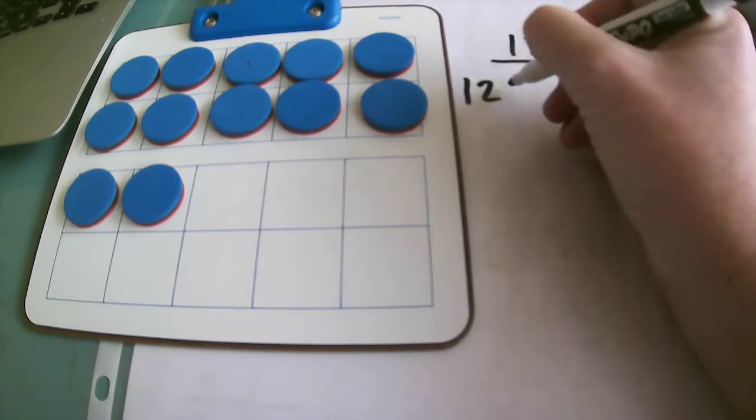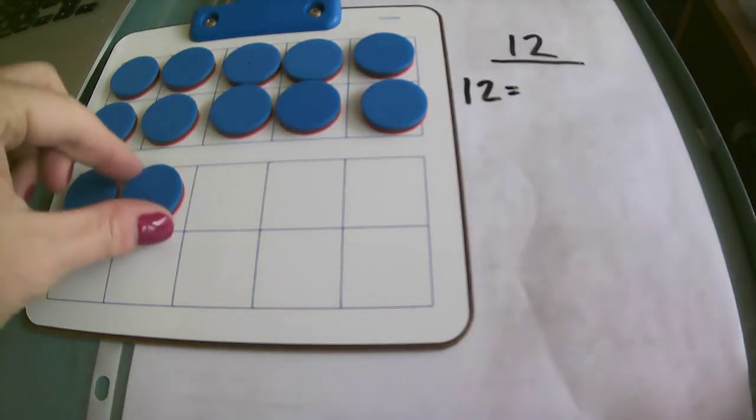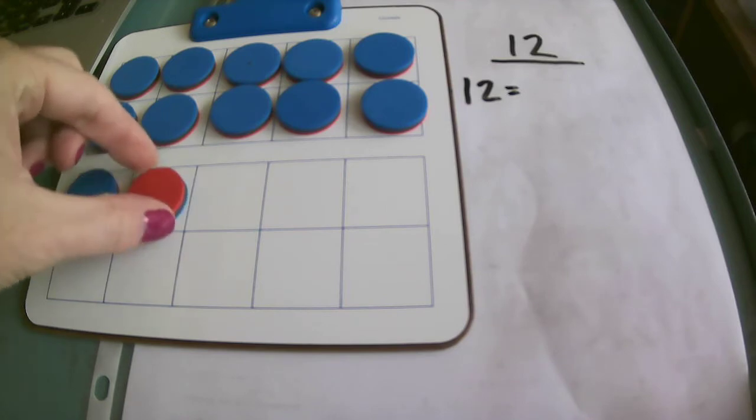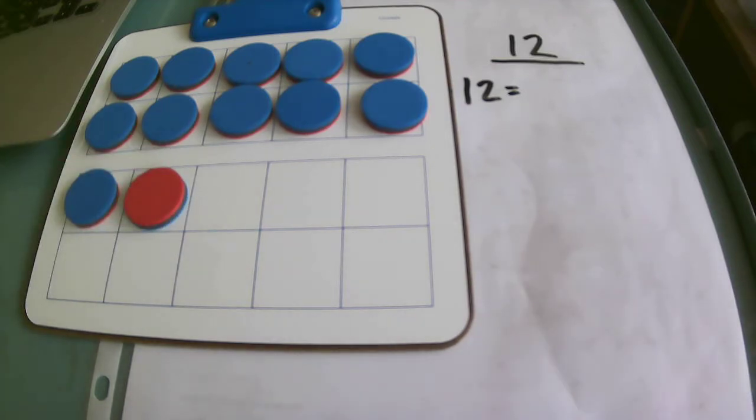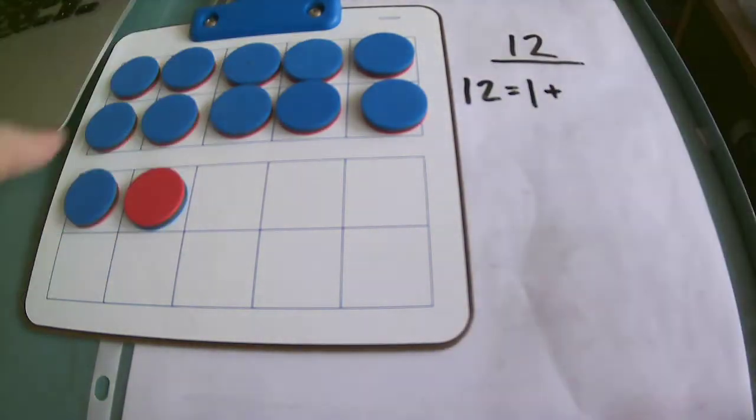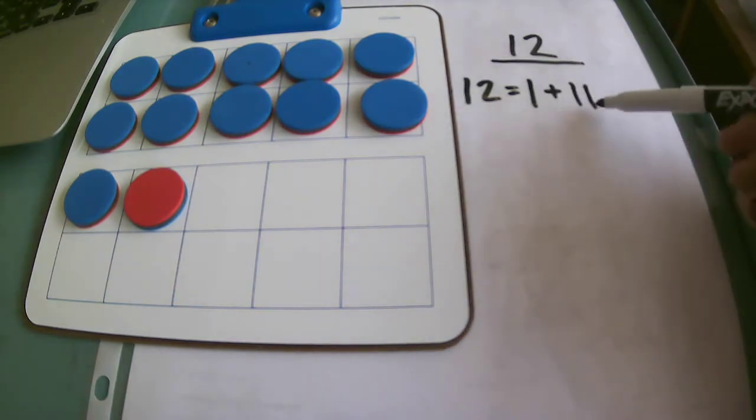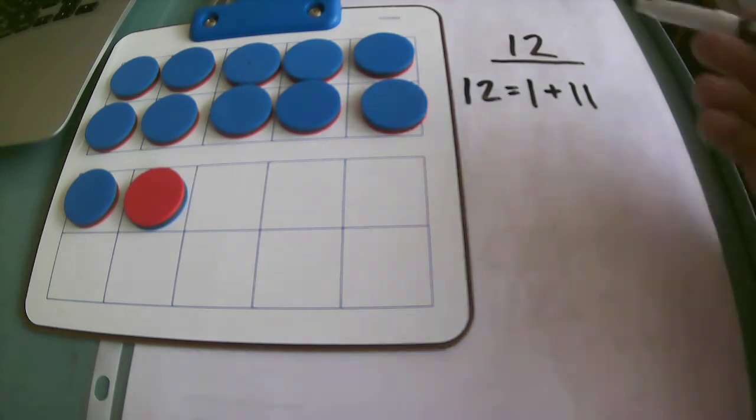In order to decompose this I can flip this color and now it's showing different numbers. So I have 1 red and then I have 11 blues because I know that 1 and 11 are number partners of 12. I've shown it here on my 10 frames.